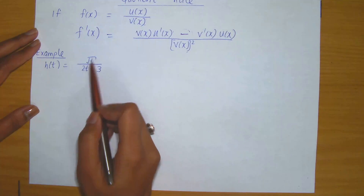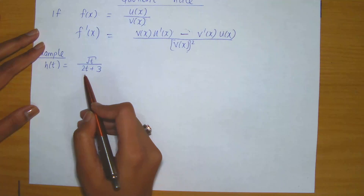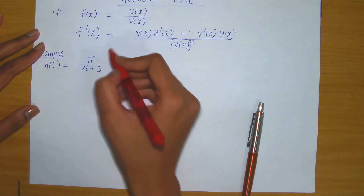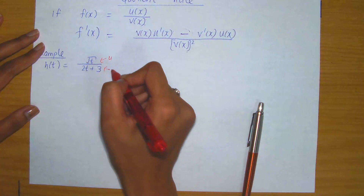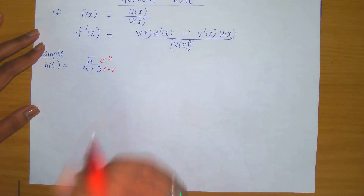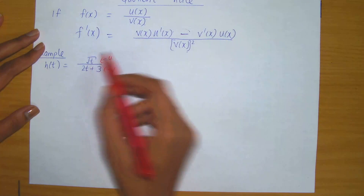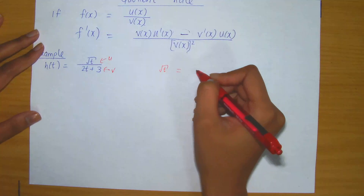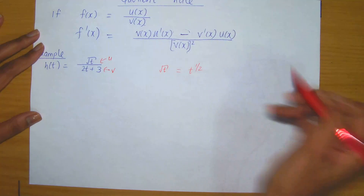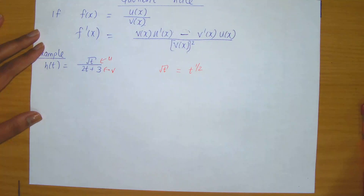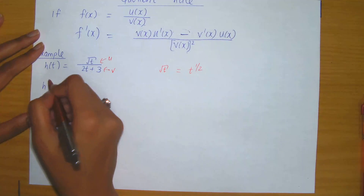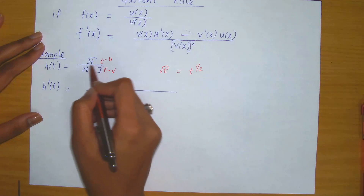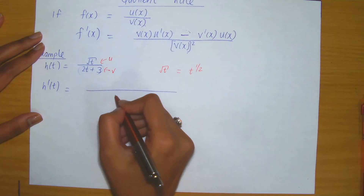Here is an example: h of t equals root t divided by 2t plus 3. This is definitely a quotient of two functions — you can view root t as u and 2t plus 3 as v. As before, whenever you have a radical, rewrite it in terms of exponents: root t is just t to the power of one half. Now applying the quotient rule to find h prime of t, I write down the fraction with the denominator squared: 2t plus 3 all squared, and immediately write down 2t plus 3 in the numerator.